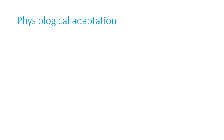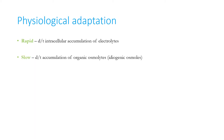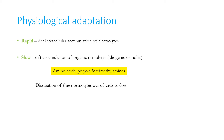The body adapts physiologically to increased osmolality in the extracellular fluid. Rapid adaptation occurs within a few hours due to intracellular accumulation of other electrolytes. Slow correction is due to accumulation of organic osmolites — recognized as amino acids, polyols, and trimethylamines. The dissipation of these osmolites out of cells is very slow, so rapid correction of hypernatremia carries the risk of cerebral edema.